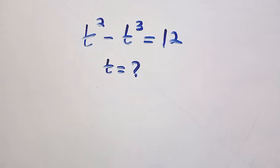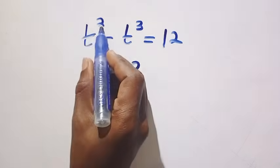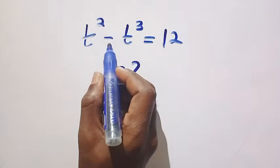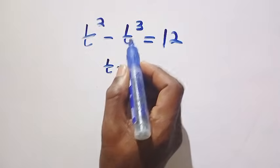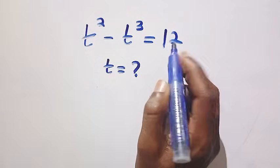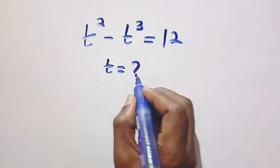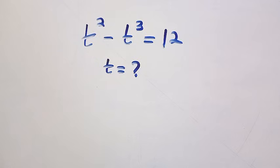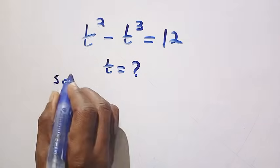Good day viewers, you are welcome. How to solve these nice algebraic equations? Given that t squared minus t cubed equals 12. And what is the value of t? Let's see the solution.